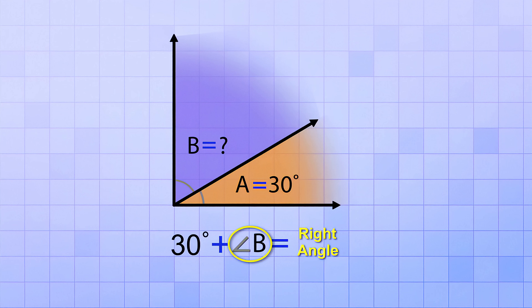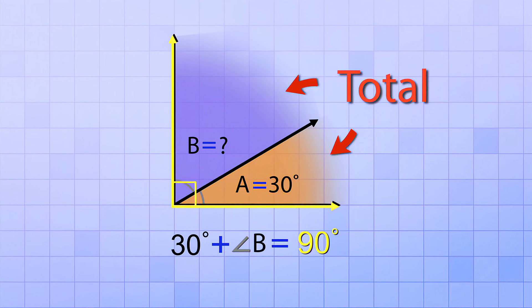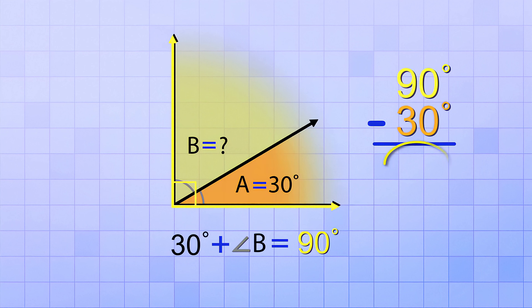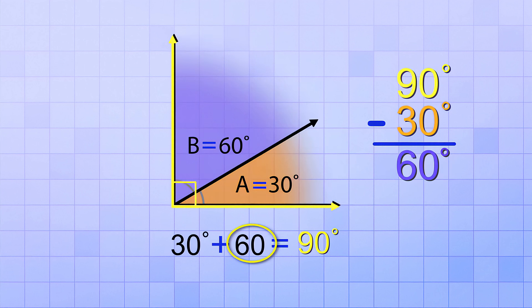Fortunately, it's easy to figure that out now because we know that a right angle is 90 degrees, so we know what the total of both angles must be. That means that to find angle B, all we have to do is take the total, which is 90 degrees, and subtract angle A, which is 30 degrees, and whatever is left over will be the measurement of angle B. So 90 minus 30 equals 60. So angle B is 60 degrees.